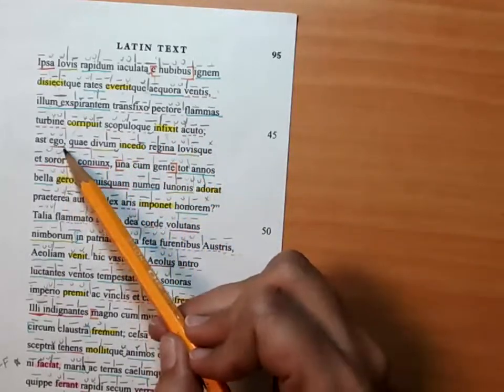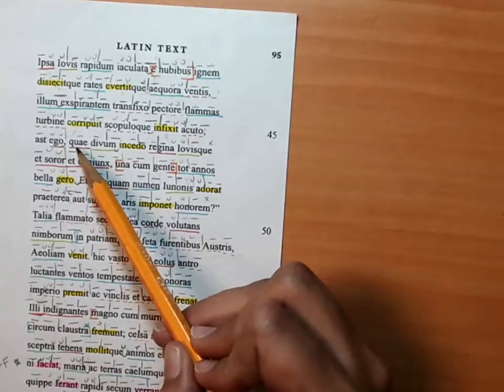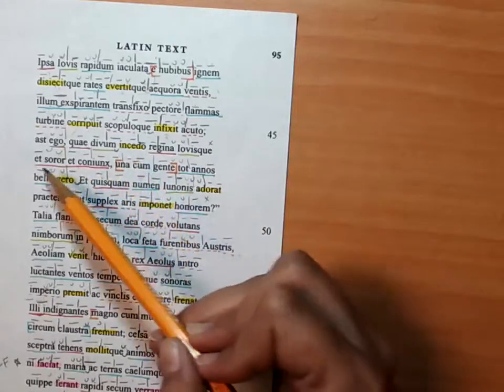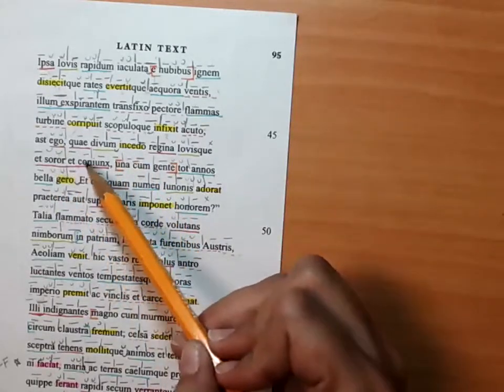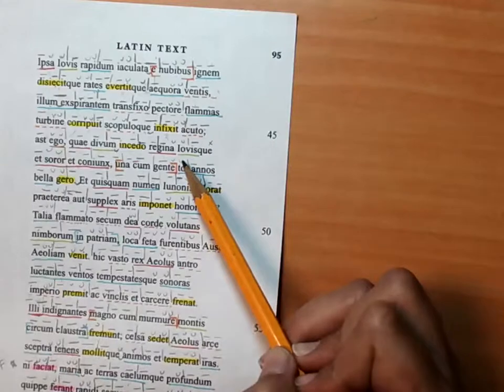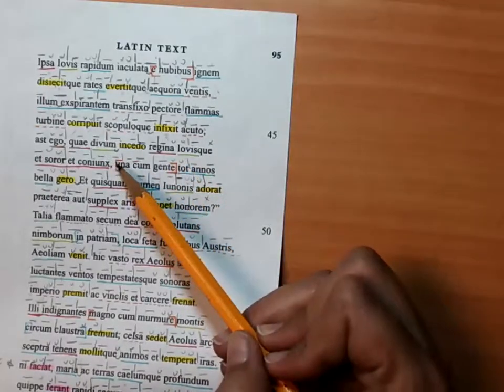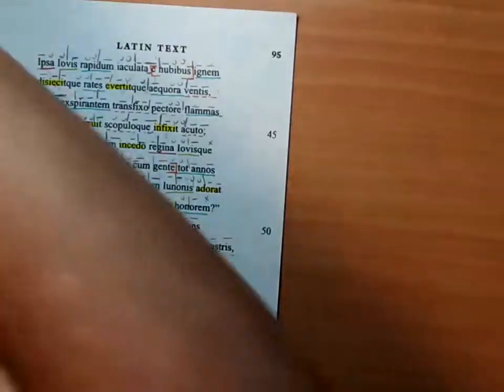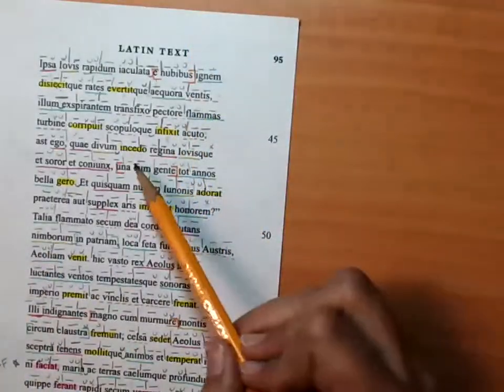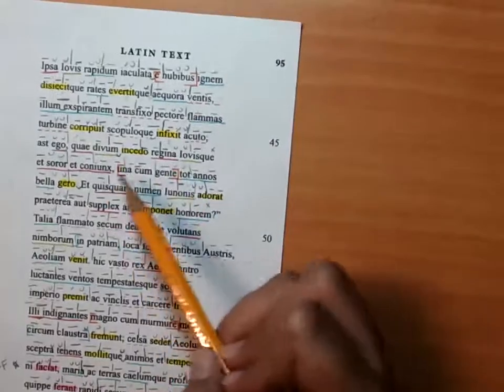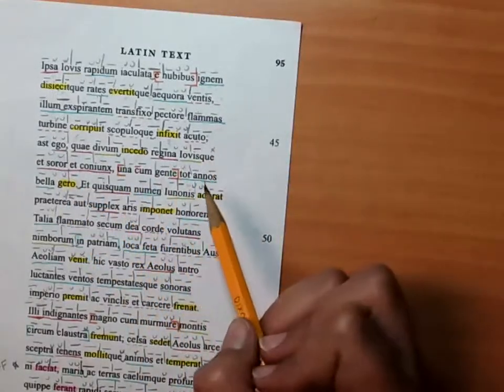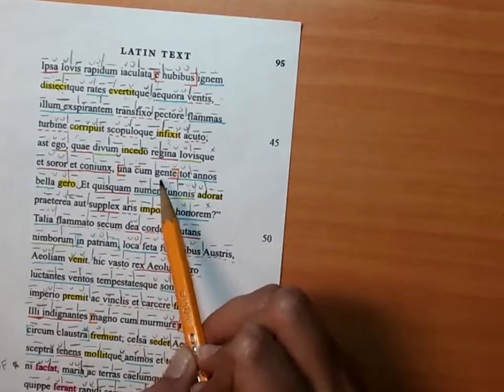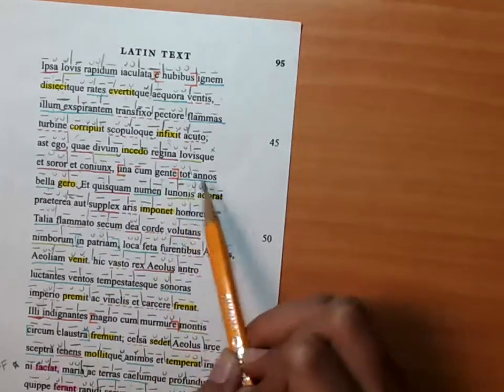But I, the queen of the gods, who am both the sister and the wife of Jove, I in Cato, what does in Cato mean? Oh, I walk proudly, queen of the gods and sister and wife of Jove. I waged wars with one tribe or people for so many years.